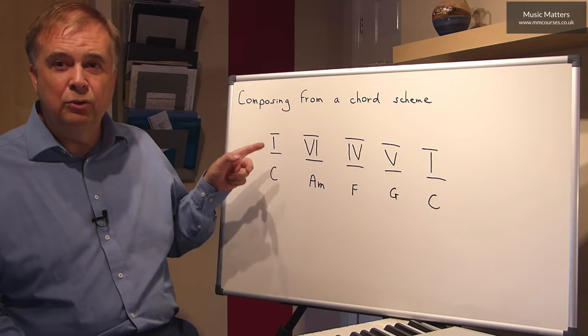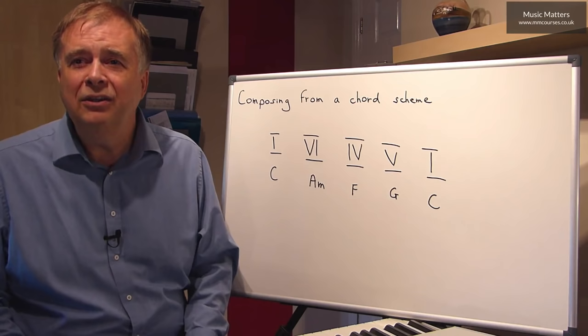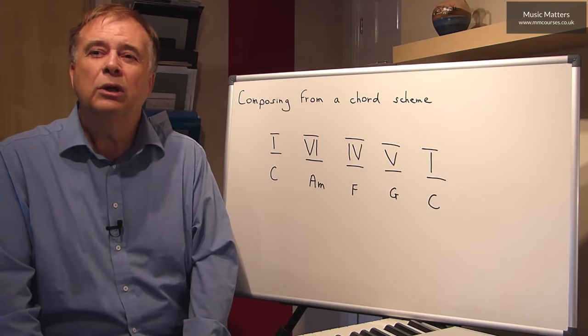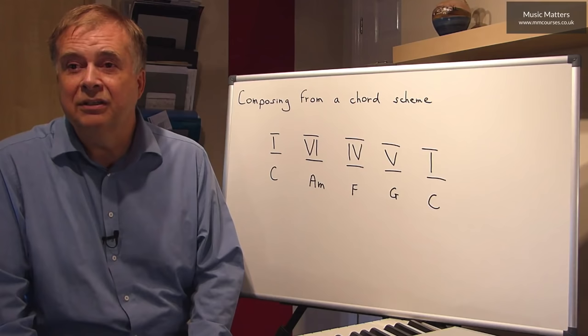So once you've got the notes C, E, G for that first chord, you could have three notes, four notes, seven notes, you could spread them out, you could do anything you like with them, as long as you're using those notes. If you use other notes, then of course they will clash with that chord, and then the music takes on a much more dissonant kind of characteristic.